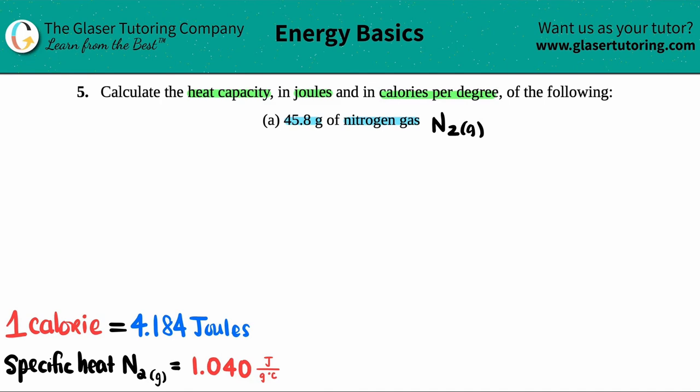There are a couple of things that we have to know in order to do this problem, which I wrote down here. One is a conversion. So we definitely have to memorize that, especially if your teacher or professor does not give you this on your quizzes or exams. One calorie, a unit for heat, is equal to 4.184 joules, a unit of heat energy. And we need to know the specific heat of nitrogen. In this case, it's 1.040.